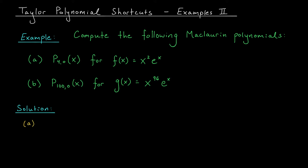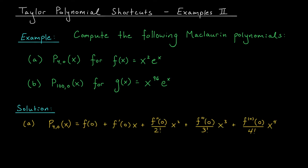To find our fourth degree approximation, we can go by definition. According to our definition, p four of zero is given by this expression here. It's a polynomial whose coefficients are constructed using the derivatives of our function, evaluated at zero, and divided by the factorial numbers. So we're going to have to start by computing these derivatives.